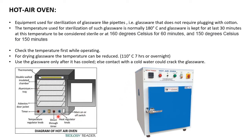The hot air oven has a timer, temperature regulator knob, heat regulator knob, main switch, asbestos door jacket, aluminium trays to keep material inside, a double-walled insulator chamber to maintain temperature, a thermometer, and a door. To distinguish between incubator and hot air oven — they look similar — check the label and note that the incubator usually has a small glass panel on the front door.